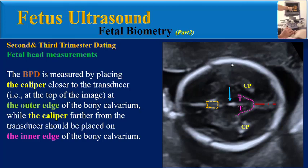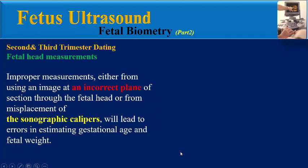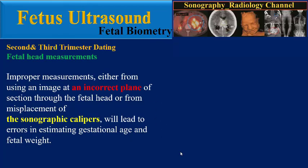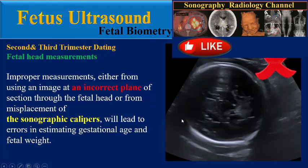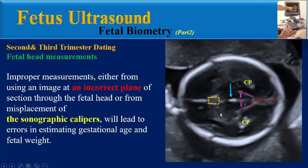The BPD is measured by placing the caliper closer to the transducer at the outer edge of the bony calvarium, while the caliper farther from the transducer is placed on the inner edge of the bony calvarium — that is, the biparietal diameter is measured from leading edge to leading edge of the calvarium. Improper measurements from an incorrect plane or misplacement of calipers will lead to errors in estimating gestational age and fetal weight.